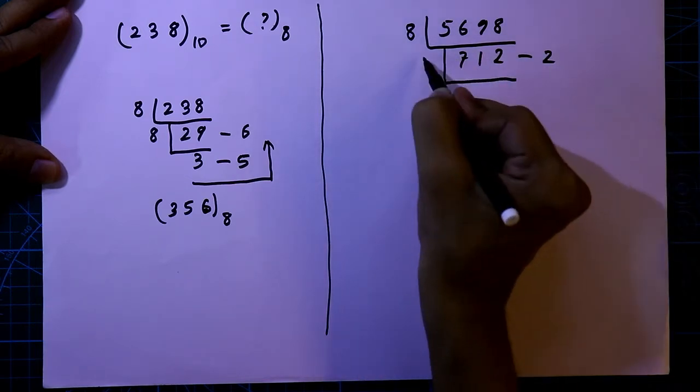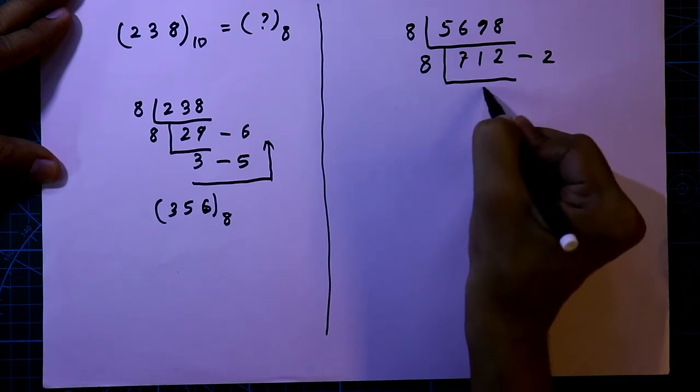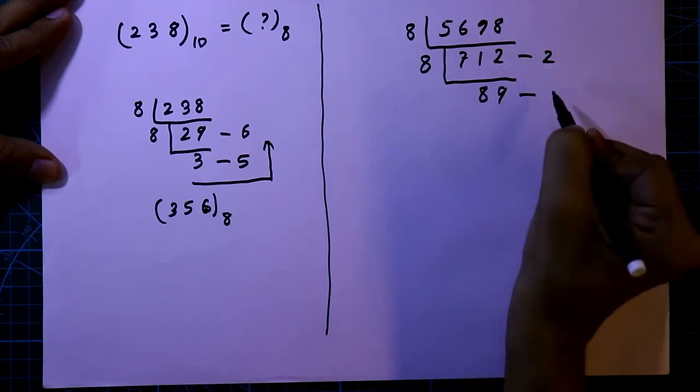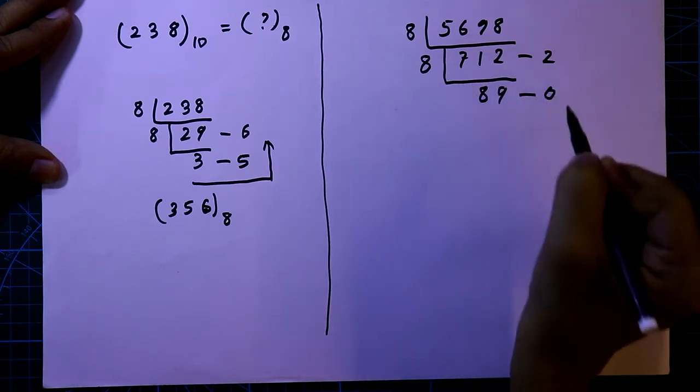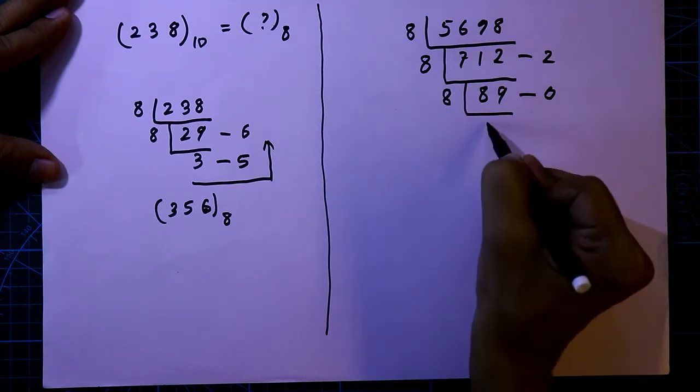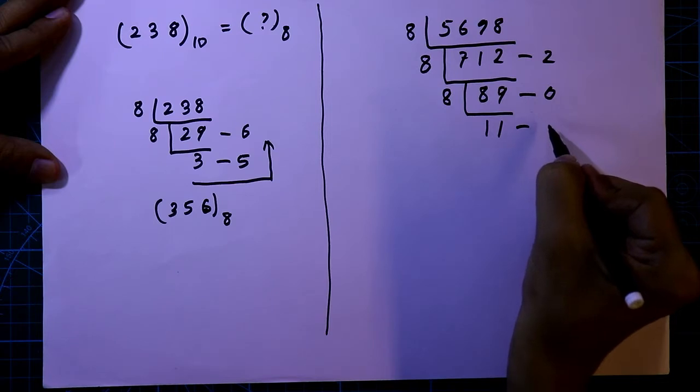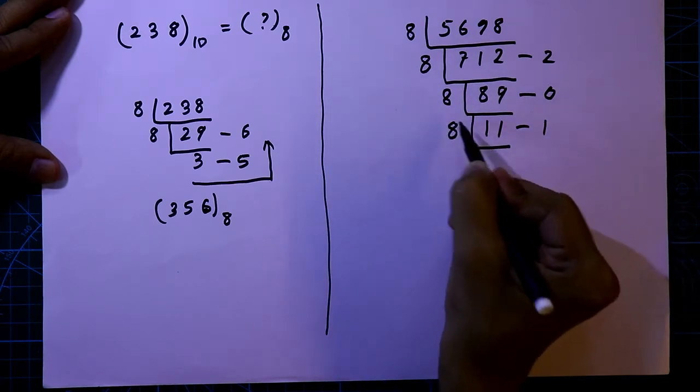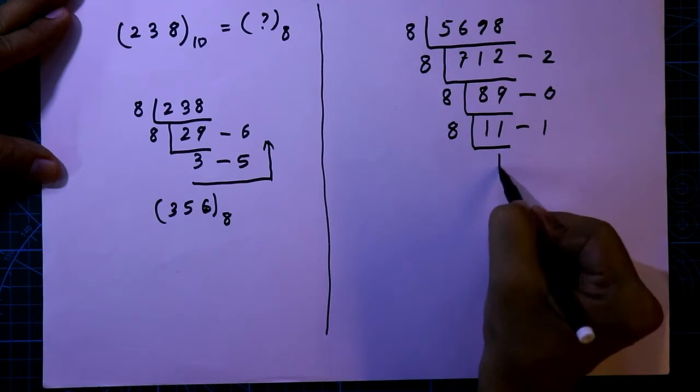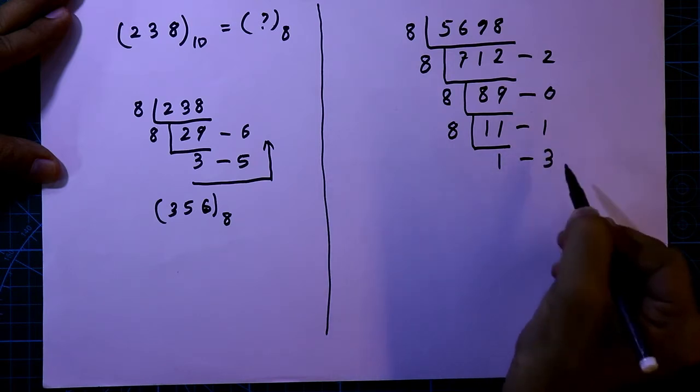Again, we have to divide this number by 8. The quotient will be 89 and the remainder is 0. Again, we have to divide, the quotient is 11 and the remainder is 1. Again we have to divide this by 8, the quotient is 1 and the remainder is 3.